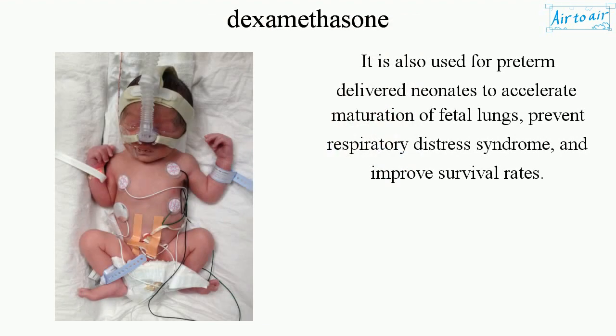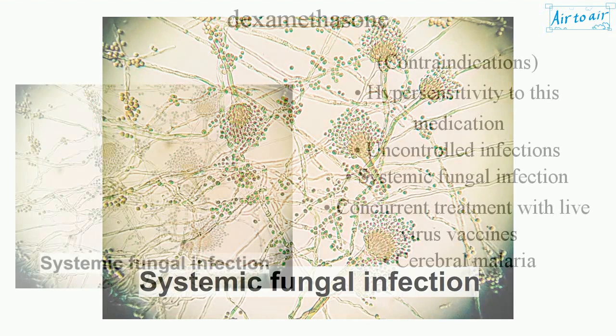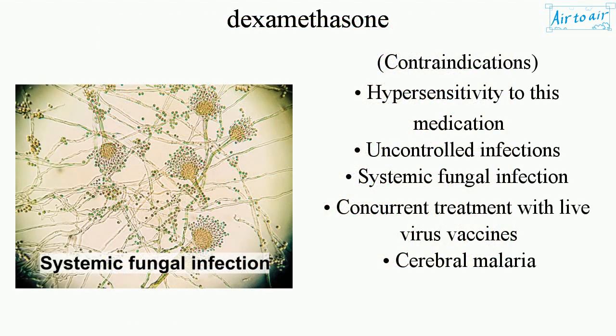Dexamethasone is also used for preterm delivered neonates to accelerate maturation of fetal lungs, prevent respiratory distress syndrome, and improve survival rates. Contraindications include hypersensitivity to this medication, uncontrolled infections, systemic fungal infection, concurrent treatment with live virus vaccines, and cerebral malaria.